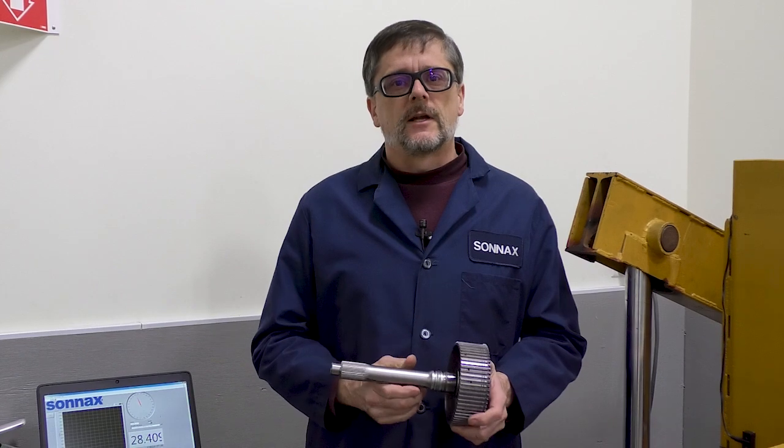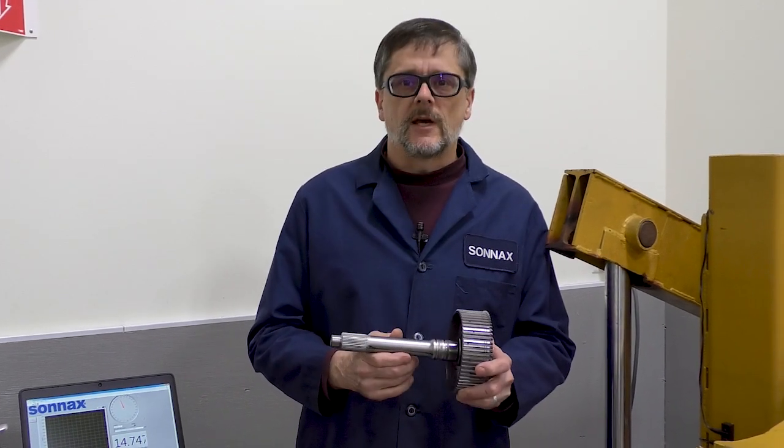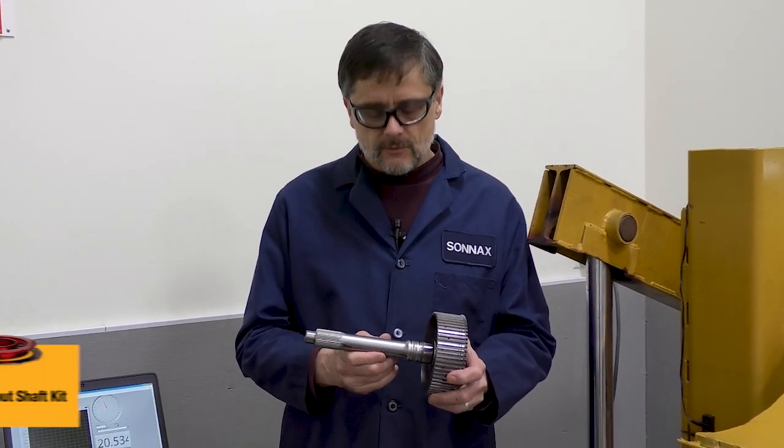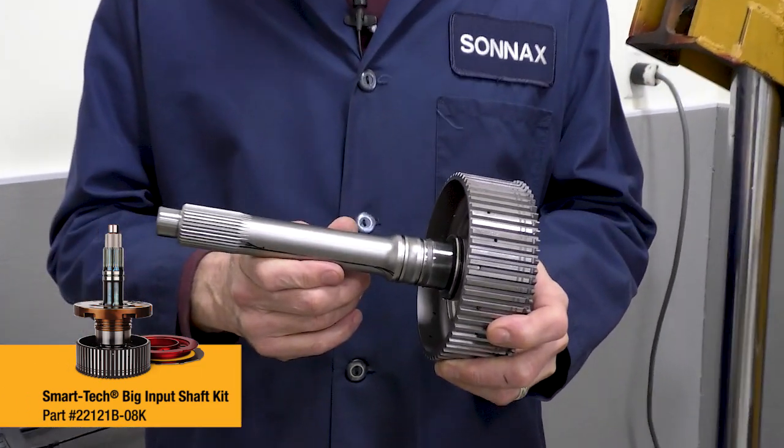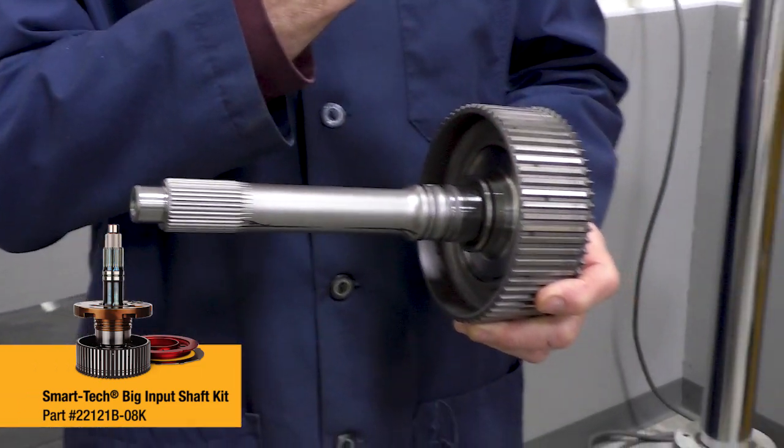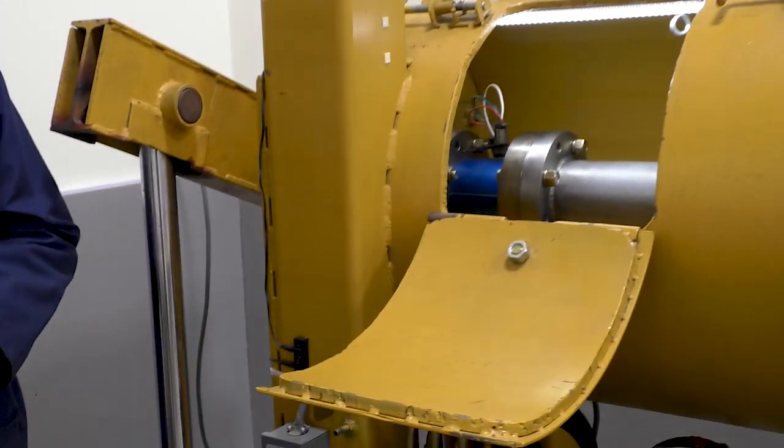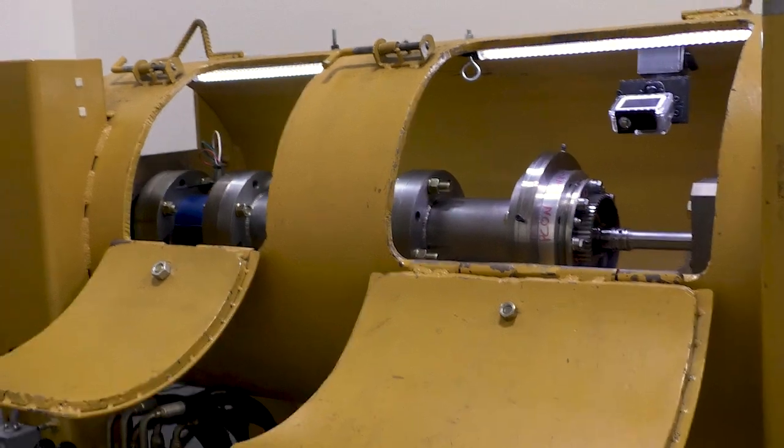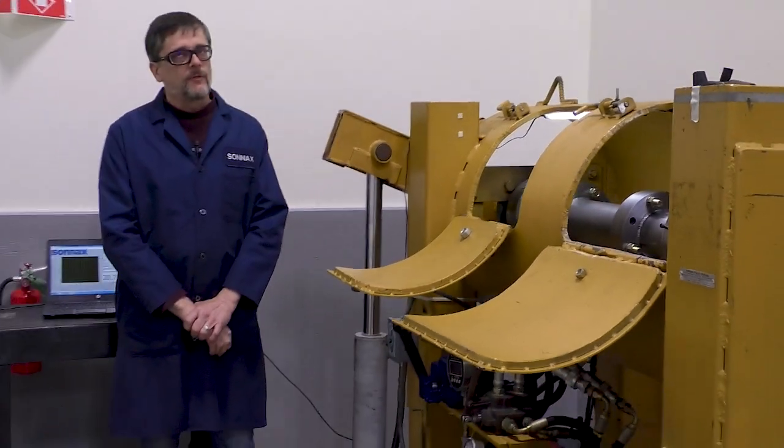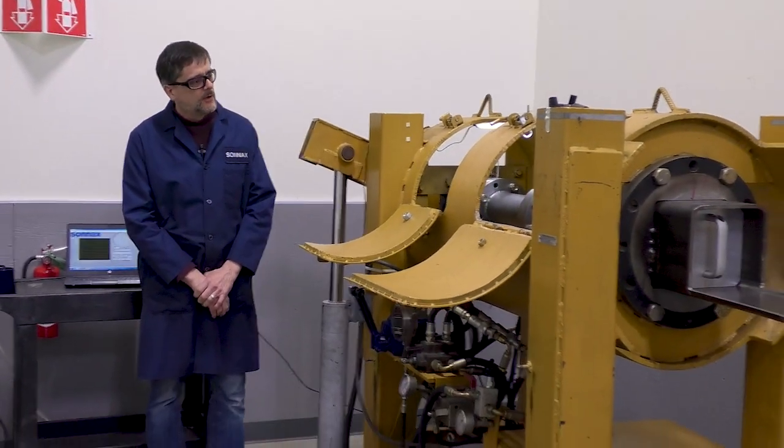Hi there, I'm Greg Nader with Sonex and today we're going to be testing some shafts, specifically our 22-121B-08K input shaft. We have our shaft breaking machine here, which we affectionately call the Yellow Submarine. It's capable of somewhere in the order of 50,000 foot-pounds of torque.